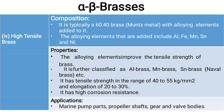High tensile brass is typically a 60-40 brass (Muntz metal) with additional alloying elements including aluminum, iron, manganese, tin, and nickel. This results in improved tensile strength. These are further classified as aluminum brass, manganese brass, tin brass, etc. The key feature of this type is high corrosion resistance. Applications include marine pump parts, propeller shafts, and gear and valve bodies.